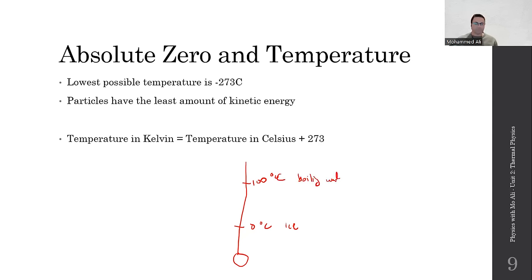Temperature is also constant during condensation and freezing because the energy is used for potential energy changes. Molecules have potential energy because they have space between them. If any two molecules are trying to attract each other but are kept farther apart, they have potential energy. The farther and farther molecules are from each other, the more potential energy they have.